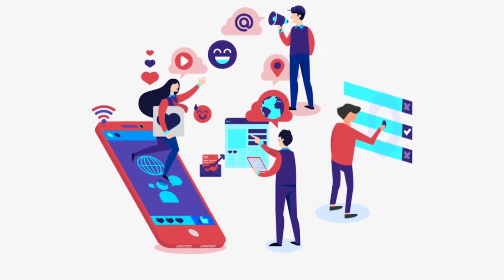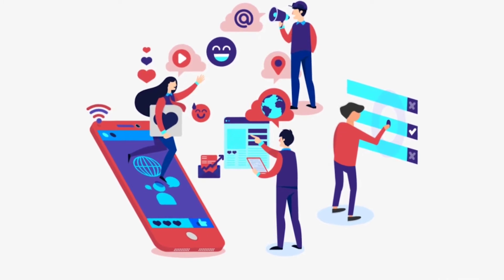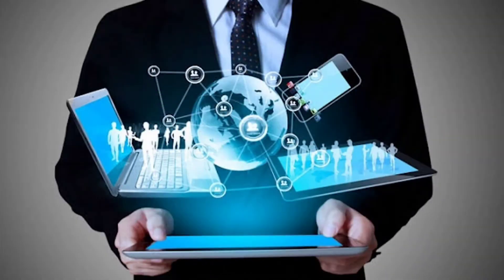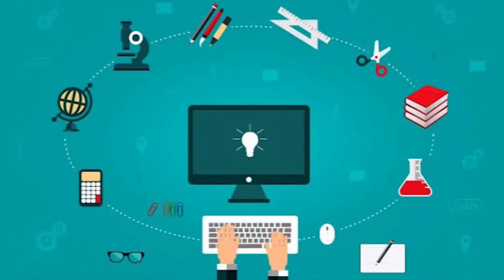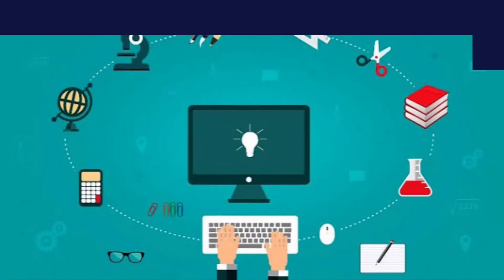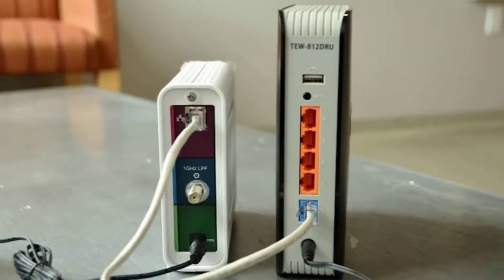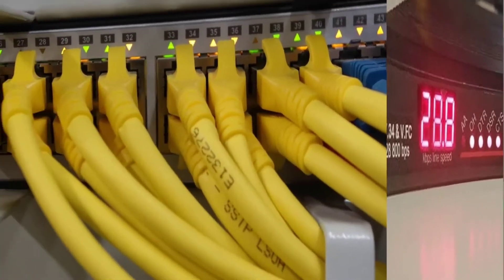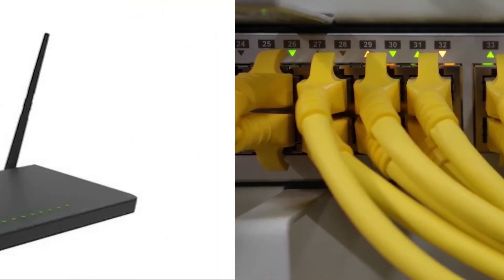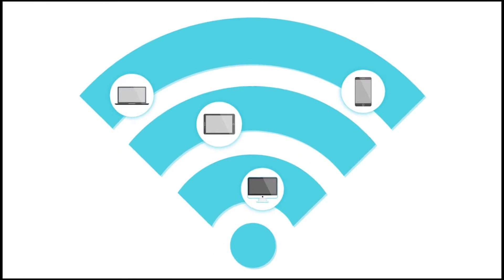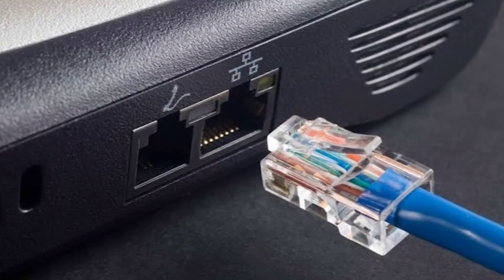Along with providing the internet with the requested bandwidth, ISPs also provide services like webpage hosting, domain name registration, mail services and file transfers, etc. They use different kinds of technologies to provide internet to different kinds of users through modems, dialups, cable internet, wireless broadband, wifi internet, ethernet, etc.